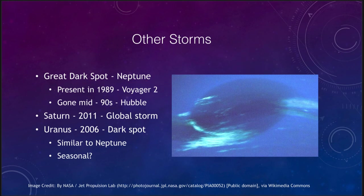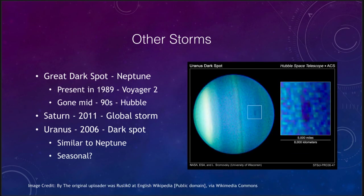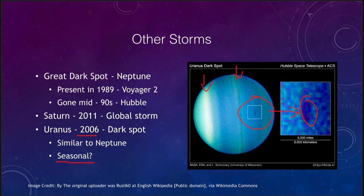We also see storms on the other planets. On Saturn in 2011, we saw a global storm stretching out across the whole latitude of Saturn. And even on Uranus, which is so bland, enhanced images do give us some very light banding structure, and if we zoom into certain sections we can see that there are also dark spots on Uranus seen in 2006. It's wondered if these are seasonal, given that Uranus has the most extreme seasons of anything in the solar system because its tilt is the greatest.